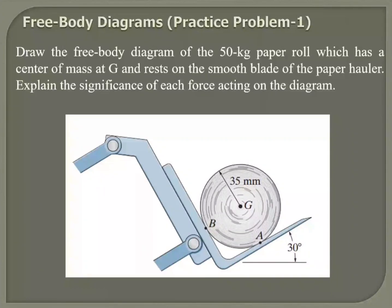Draw the free-body diagram of the 50 kg paper roll which has a center of mass at G and rests on the smooth blade of the paper holder. Explain the significance of each force acting on the diagram.